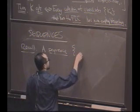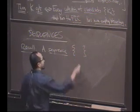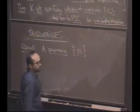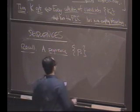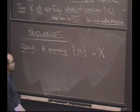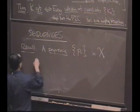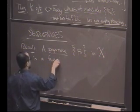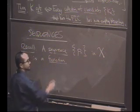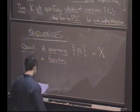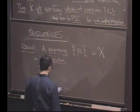Now, normally, we notate a sequence by putting little braces around something like P sub N. So, we're indexing a bunch of points, and we'll be in some metric space X. So, a sequence, P sub N, in X, what is it? Well, it's really a function, isn't it? Like most of the objects in mathematics, we can define in terms of functions.